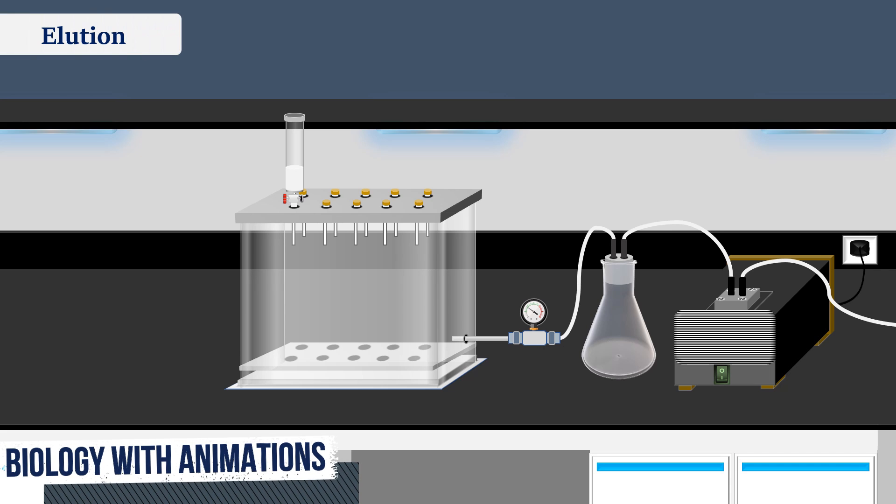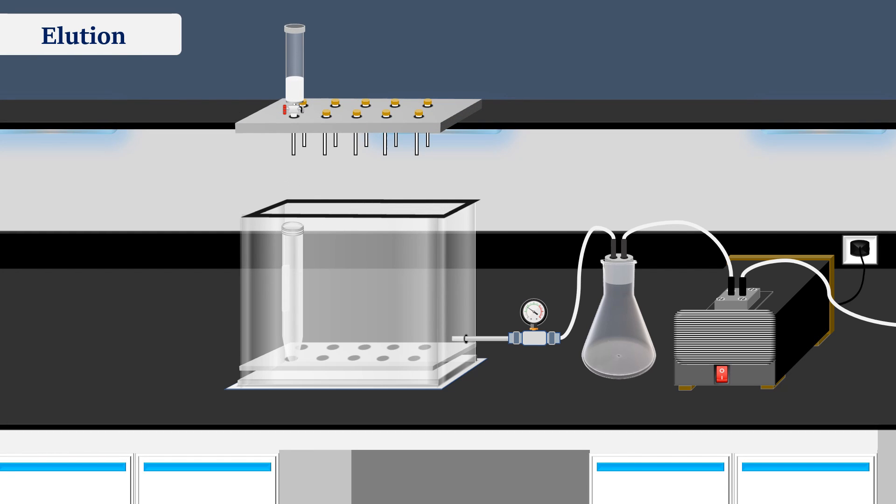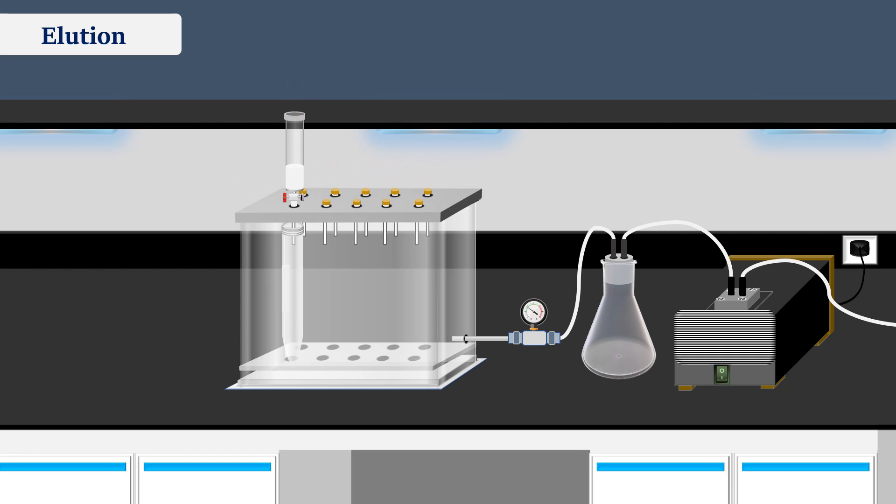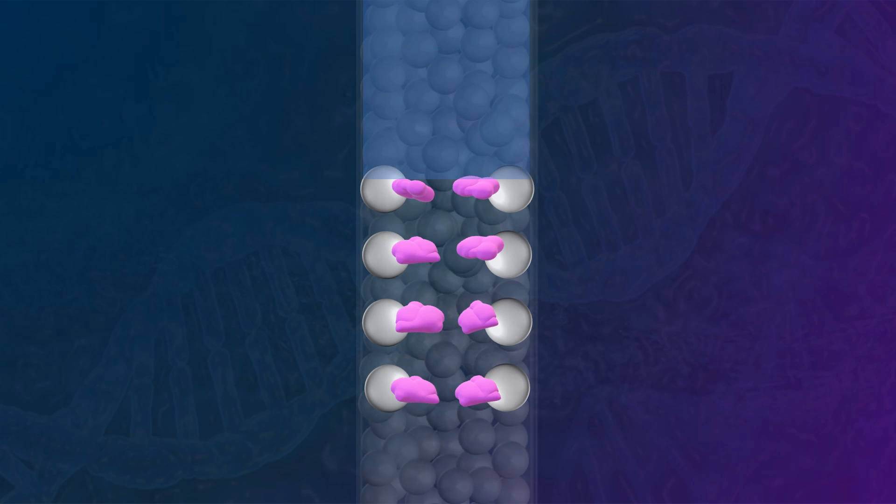After the wash step, the specifically bound target protein is eluted from the stationary phase. For this purpose, a new tube is used to collect the solution, then an elution solution is applied. The elution buffer disrupts the specific binding interactions, releasing the purified protein.